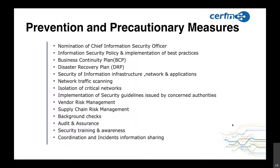Vendor risk management and supply chain risk management are among the newer vulnerabilities, because you can make your own system very secure, but your vendor or supply chain may not be as secure. We have to ensure that those organizations also have proper security measures. We can do background checks so that insider threats are minimized. Audit and assurance — you have to get your system audited on a regular basis. Security training and awareness is also very important, because cyber security knowledge must reach every individual level so that not a single point of entry is vulnerable.